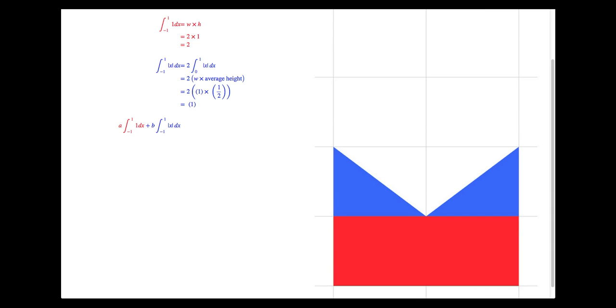And simply, when we add them together, we just multiply them with their constants. So we have a times 2 plus b times 1. So what we have is the total area is 2a plus b.